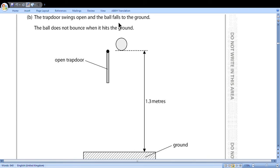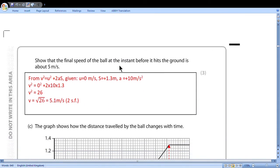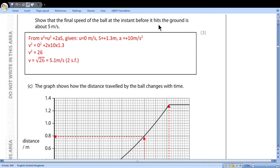The trapdoor swings open and the ball falls to the ground. The ball does not bounce when it hits the ground. So here we watch how much distance it traveled: 1.3 meters. We'll need it. And for sure it started from rest. Show that the final speed of the ball at the instant before it hits the ground is about 5 meters per second. From the equation that is given, knowing that u initial velocity is 0 meters per second from rest, distance traveled is plus 1.3 meters, acceleration is downward also plus 10 meters per second squared. We substitute these values and we get v squared equals 26, v equals square root of 26, 5.1 to two significant figures. Why two significant figures? Because s is with two significant figures and acceleration is also with two significant figures.